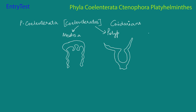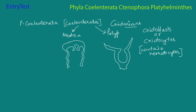These animals get the name cnidarians because of cnidoblasts, also known as cnidocytes. These contain stinging capsules called nematocysts inside them. These are present all over the tentacles — on the polyp and on the medusa. The purpose of these cnidoblasts or cnidocytes is varied: they can be used to stay stuck to a substratum, to defend themselves, or to capture prey.